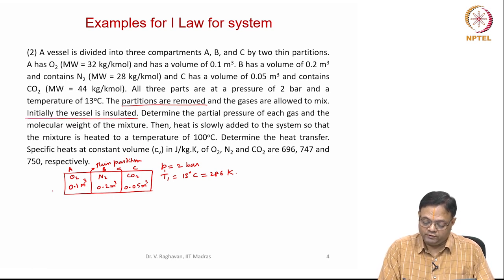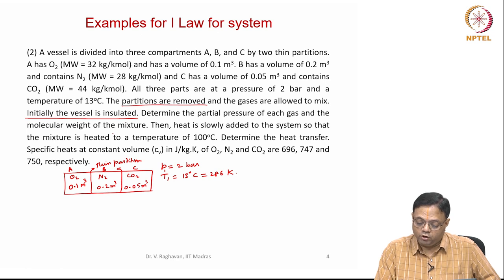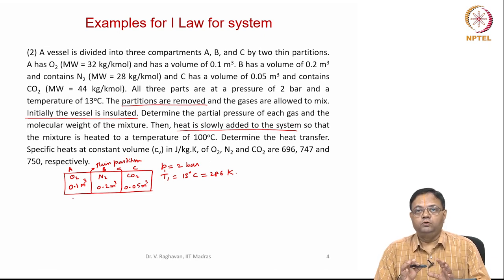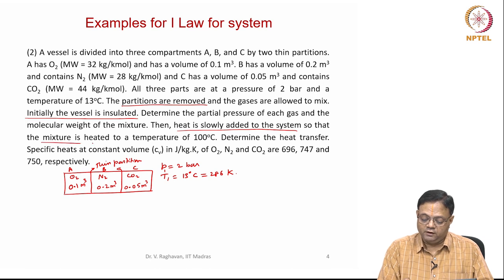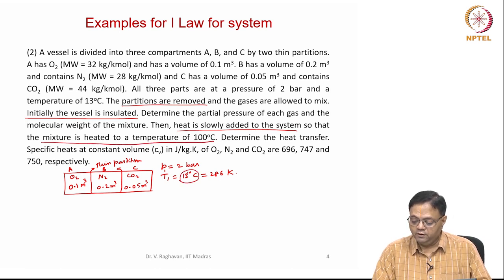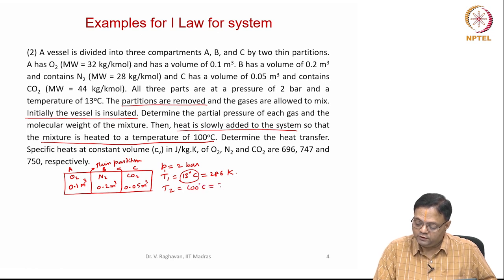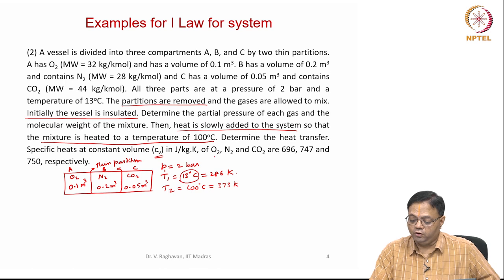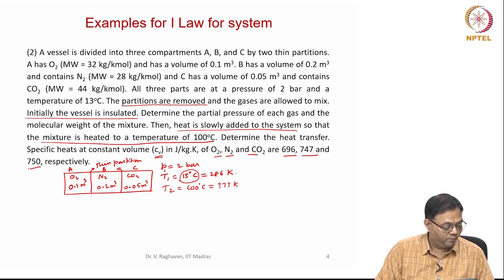The vessel is insulated, so all three compartments are insulated. Determine the partial pressure of each gas and the molecular weight of the mixture — that is the first part. Second: heat is slowly added so that the mixture is heated to a temperature of 100 degrees centigrade, i.e., T2 equals 373 Kelvin. Determine the heat transfer. Cv is given for O2, N2, and CO2 as 696, 747, and 750 joule per kg Kelvin respectively.